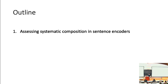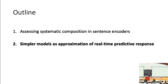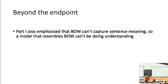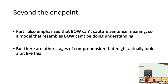That's part one. In part two, we're going to look at these simpler models and ways in which they actually resemble not the endpoint we were targeting, but maybe some other aspects of cognition, sort of by accident. A bag-of-words model really cannot be capturing sentence meaning, so any model that resembles bag-of-words can't be doing what we'd call full understanding. But it's worth noting that other stages of the human comprehension process might actually look a bit like a bag-of-words model.